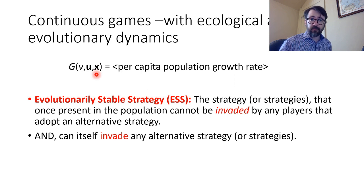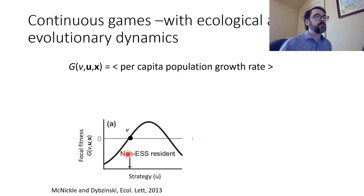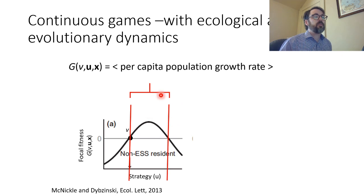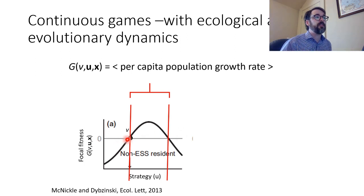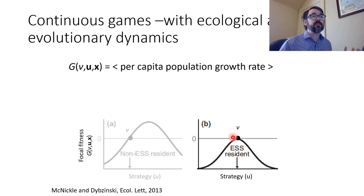What does one of these games actually look like? Usually they're just some population growth model where fitness is your per capita population growth rate. The G function is just your favorite population model with V and U stuck in. The ESS is the strategy or strategies that once they're present they can't be invaded and can invade — exactly the same as before but now we find it with calculus. If we have a non-ESS resident, selection is going to drive it up the selection gradient. We have what we call an evolutionary invasion window: everything outside of this window has negative population growth and will go extinct, while everything inside has a higher population growth rate and should gradually replace the resident. As evolution takes us closer and closer to the ESS, the population growth rate will also decline — this fitness landscape actually changes shape during the course of evolution.